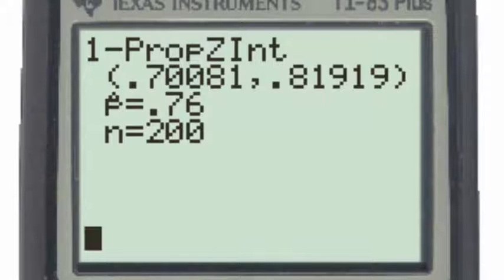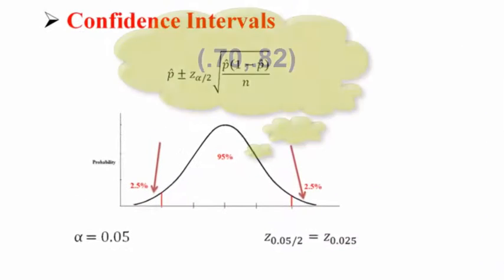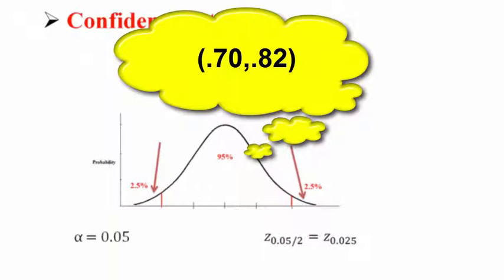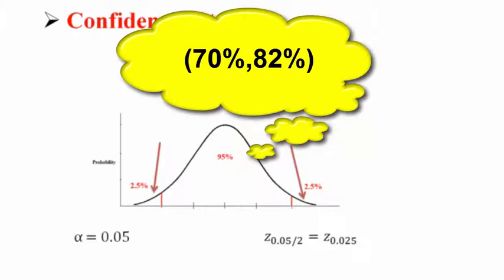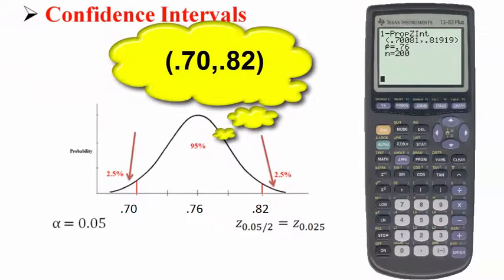The confidence level, 95 percent, means that we're 95 percent certain that the actual population percentage or proportion is between 70 and 82 percent.